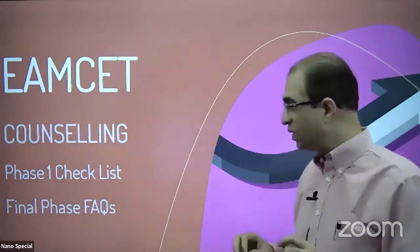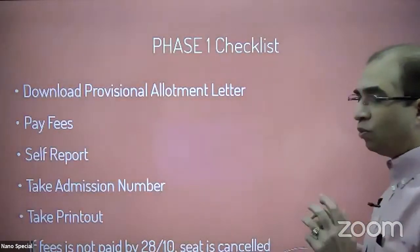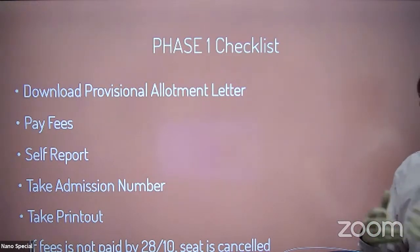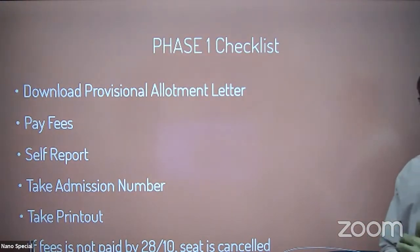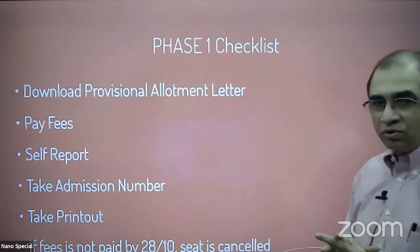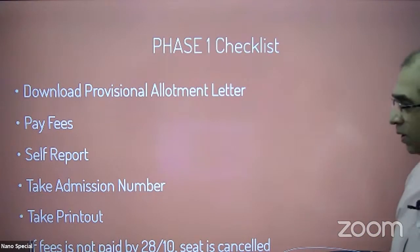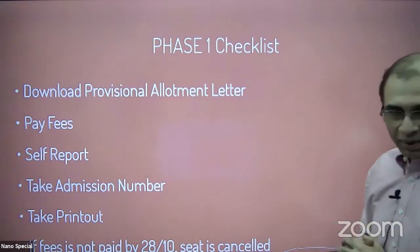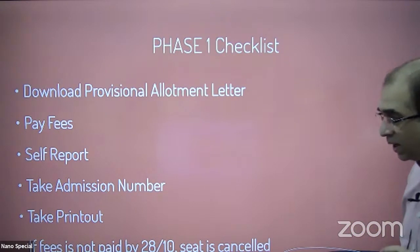First, let us finish the Phase 1 requirements. What you need to do for Phase 1: one, download the provisional allotment letter — go to your login at the MSET website and download it. Second, pay the fees specified in the provisional allotment letter. Third, do the self-reporting online. Then take note of your admission number and take a printout.